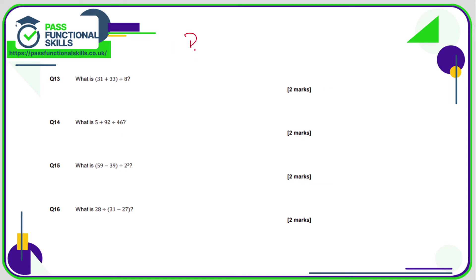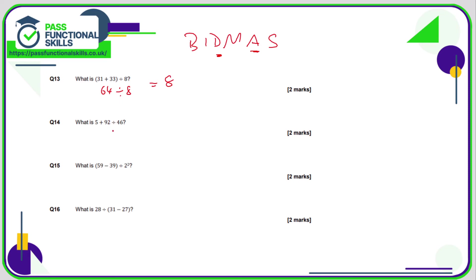Question 13 — I'll write BIDMAS to remind myself of the order of operations. Brackets first: 31 plus 33 is 64, so the question is 64 divided by 8, which is 8. Question 14 has addition and division — we do the division first. 92 divided by 46: 1 times 46 is 46, and 2 times 46 is 92, so the answer is 2. Then 5 plus 2 is 7.